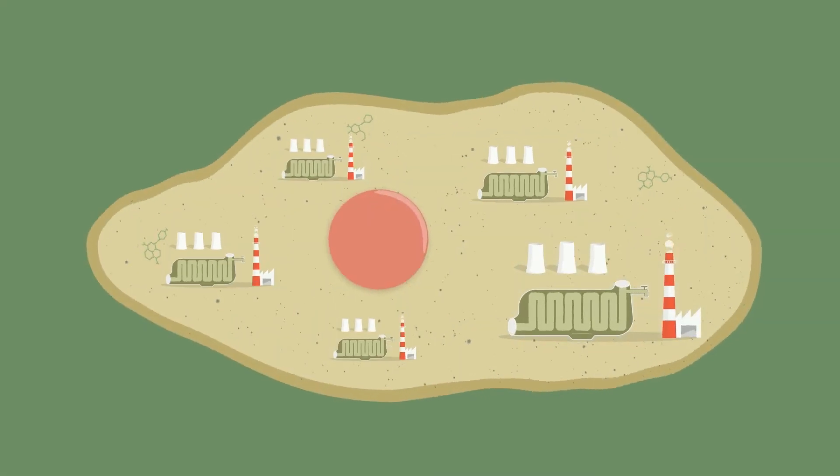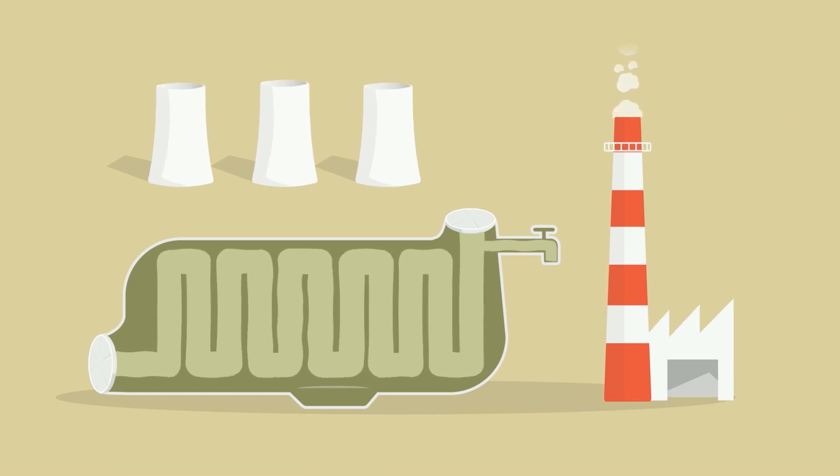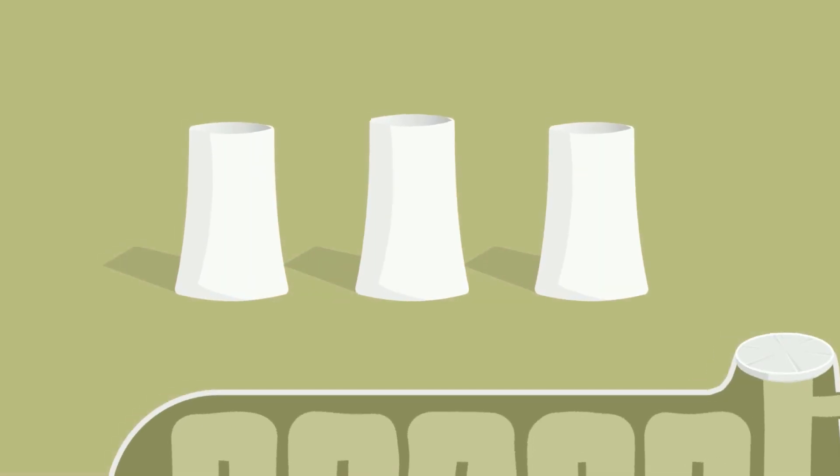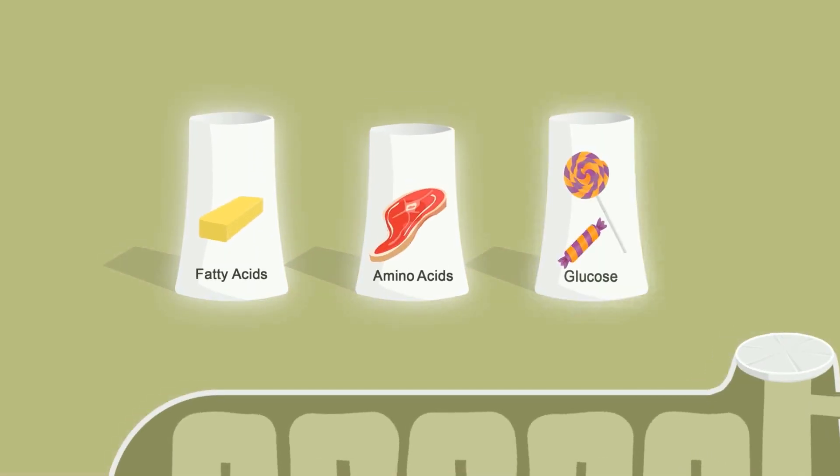Inside each of your cells are little power plants called mitochondria. They can generate ATP for your body to use as a source of energy. The energy can be generated from fatty acids, amino acids, or glucose.